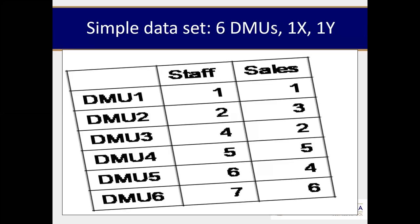We are back looking at a simple dataset, and we are going to use it to explain the three methods of assessing efficiency. Remember: first you select your DMU, second you select your input and output, third you choose your efficiency type.